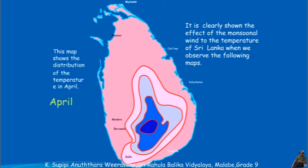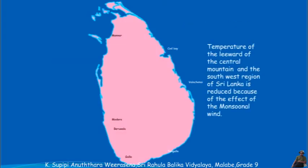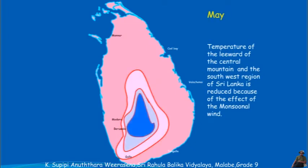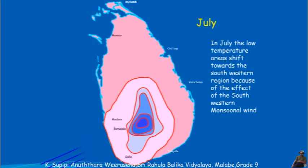This map shows the distribution of temperature in April. The temperature of the leeward side of the central mountain and the southwest region of Sri Lanka is reduced because of the effect of the monsoonal wind. In July, the low temperature areas shift towards the southwest region because of the effect of the southwestern monsoonal wind.